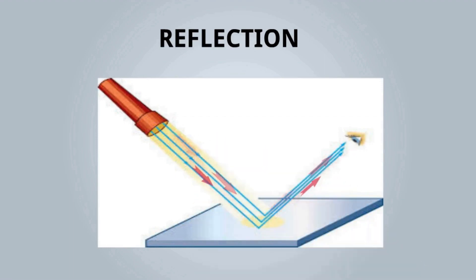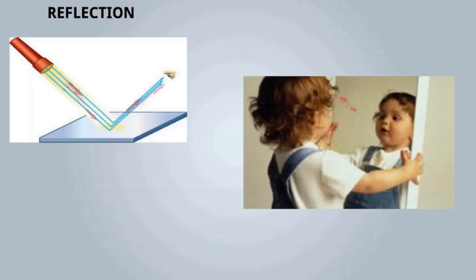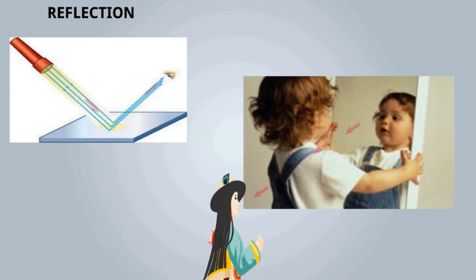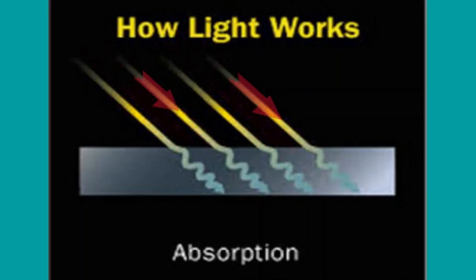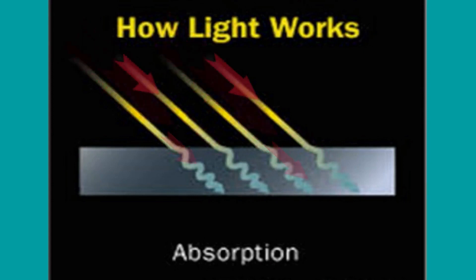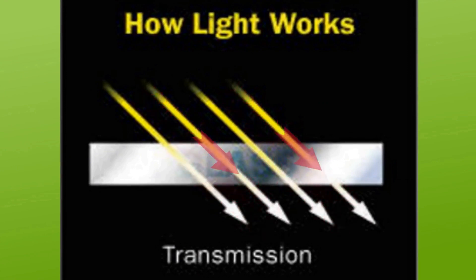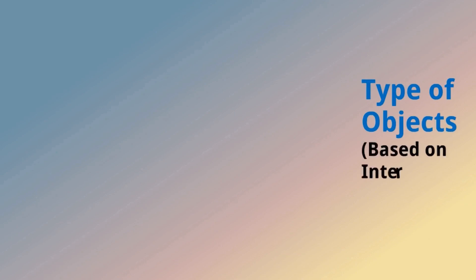For reflection — light comes from a torch, is reflected off the mirror, and comes to our eyes. That is why we see our image in the mirror. For absorption, light is absorbed by the object. For transmission, light passes through the object completely.